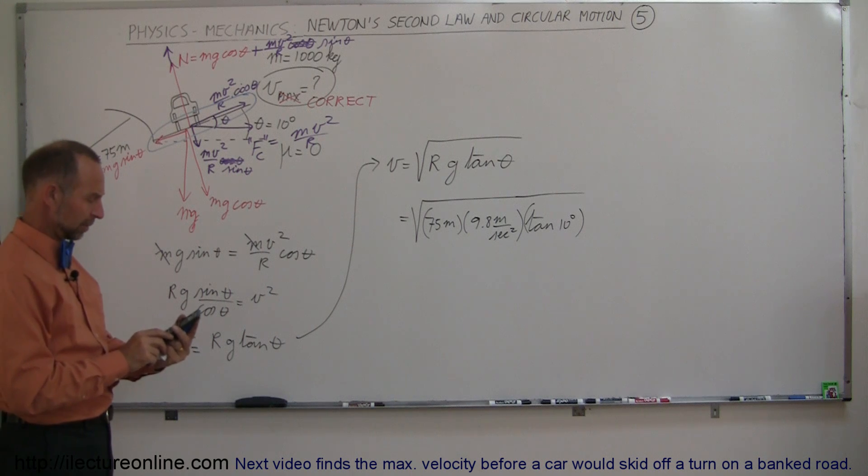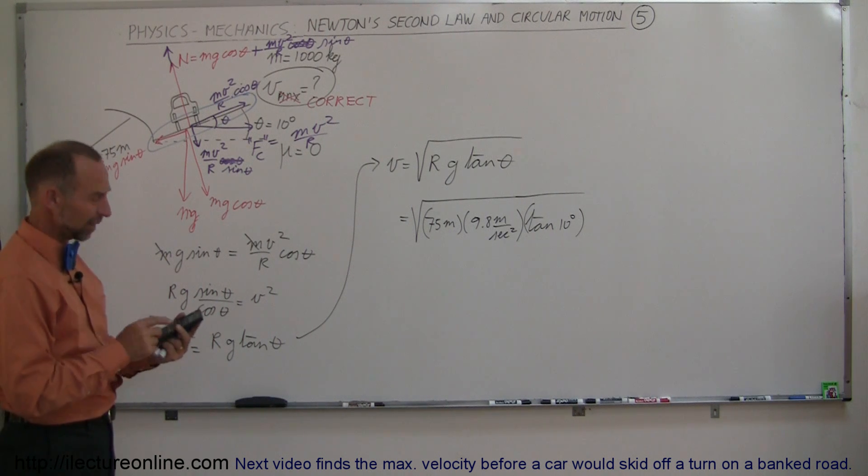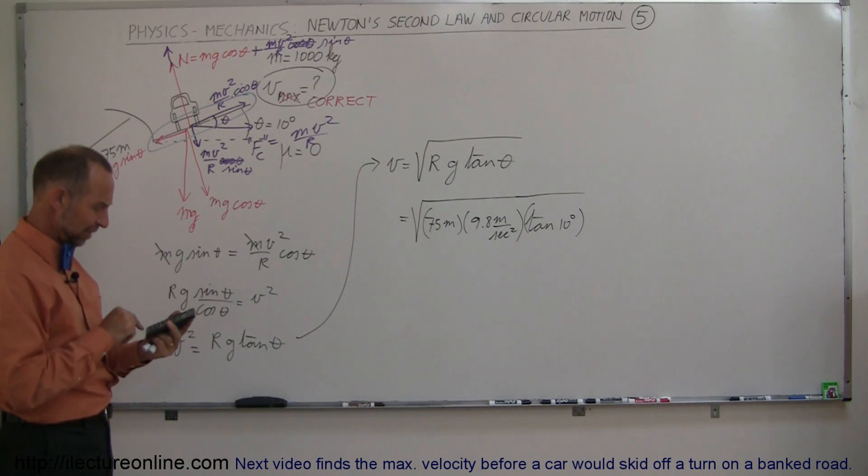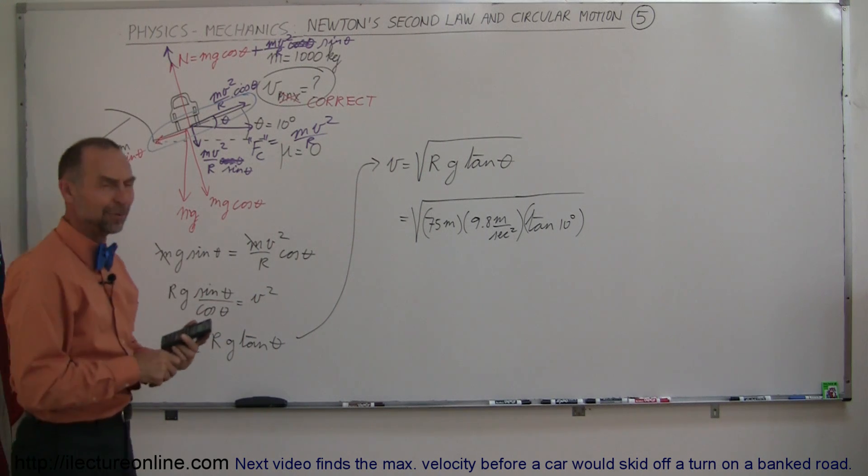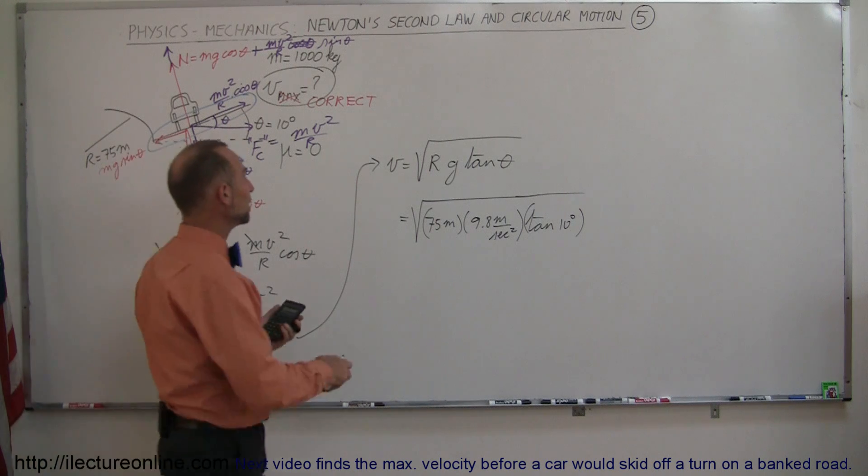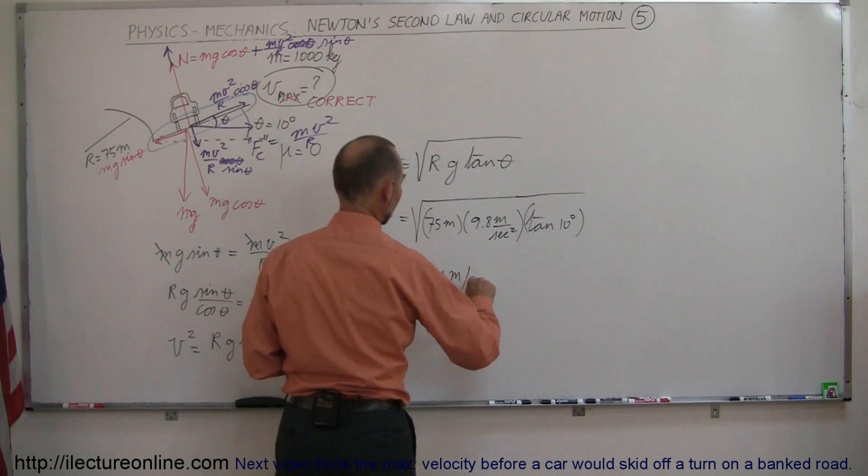Wait a minute. 130 meters per second? I have to do that again. That doesn't seem right. Maybe it is. 75 times 9.8 times the tangent of 10 degrees equals take the square root. Oh, I hadn't taken the square root yet. I was beginning to worry. That seemed like an awful big number. 11.4 meters per second.